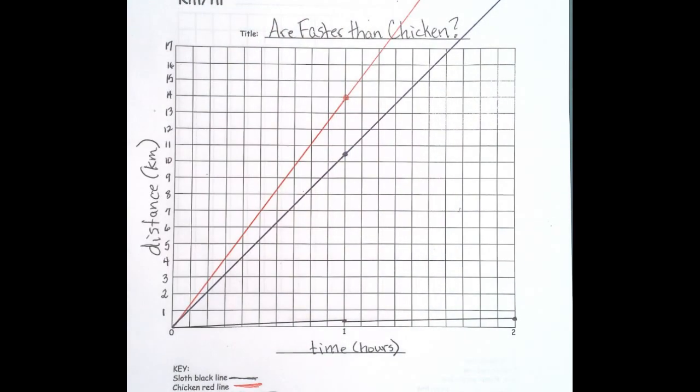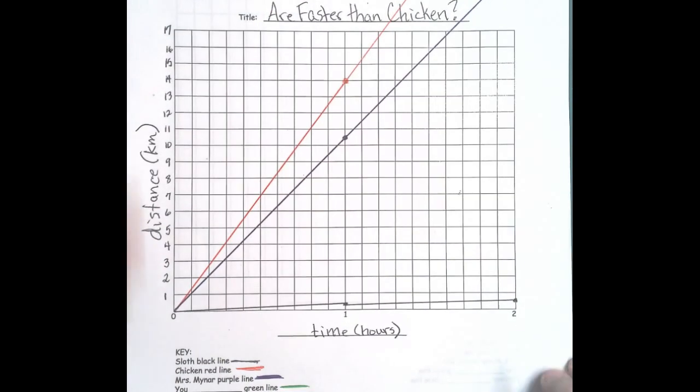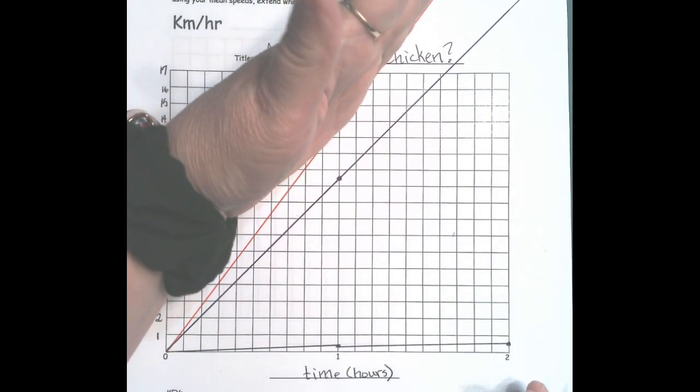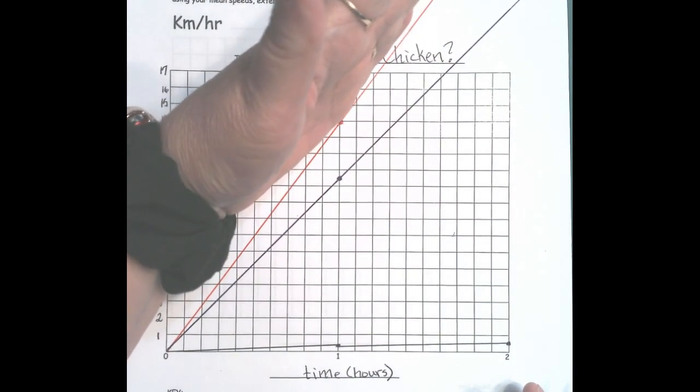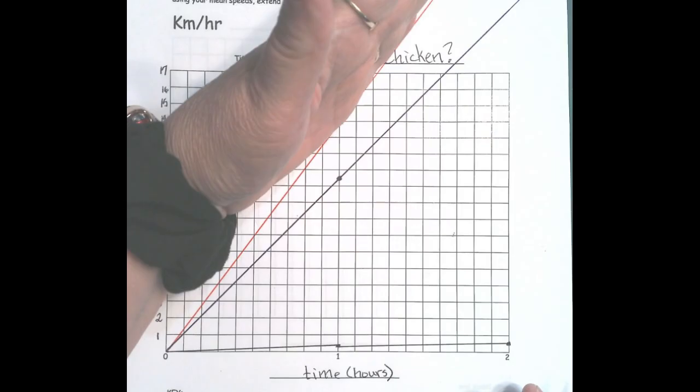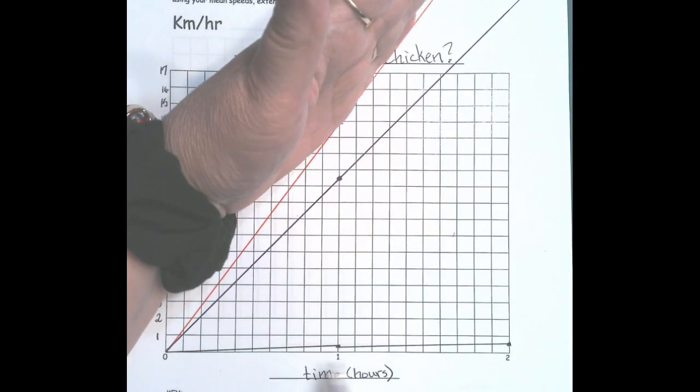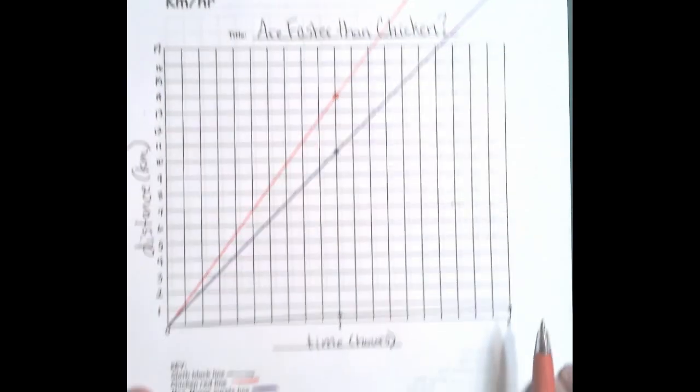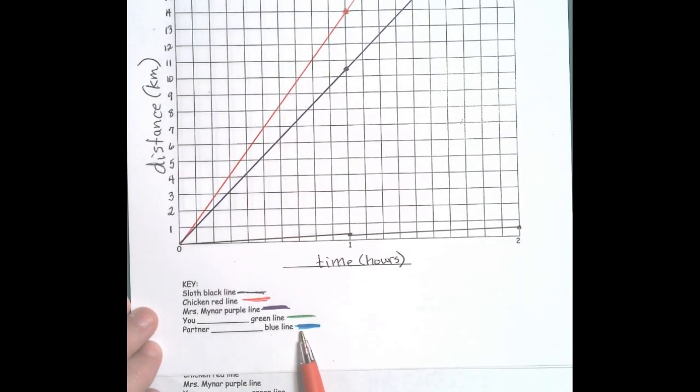You can tell that if the line is higher, then I'm not faster. Here's Miss Minor's line, here's the chicken's line, but I am faster than the sloth. Now you're going to have to graph you and your partner's data.